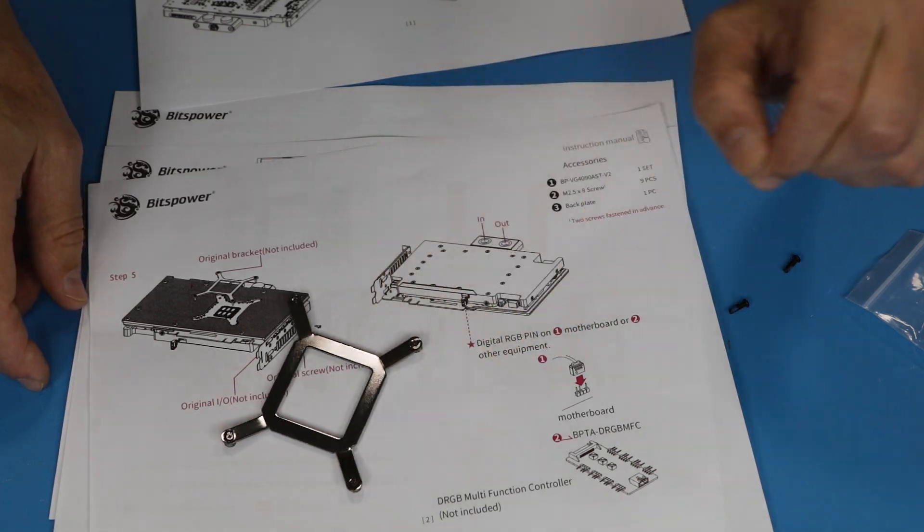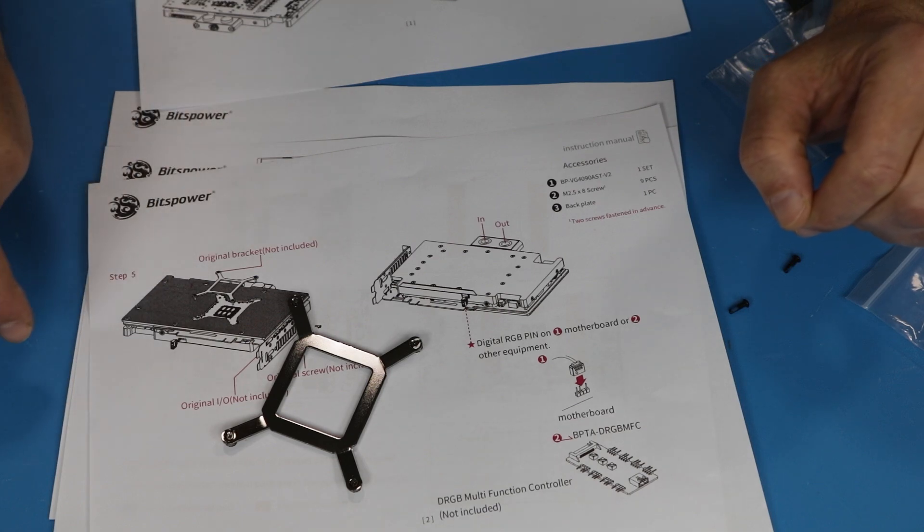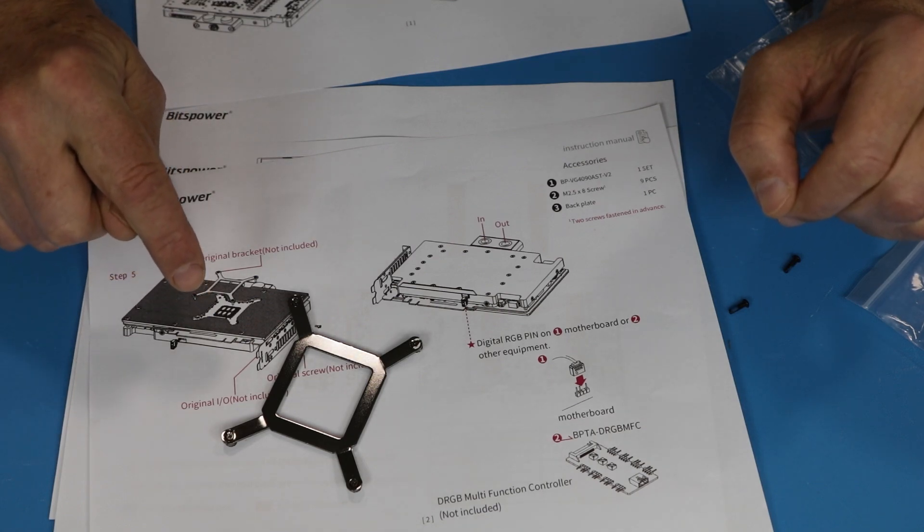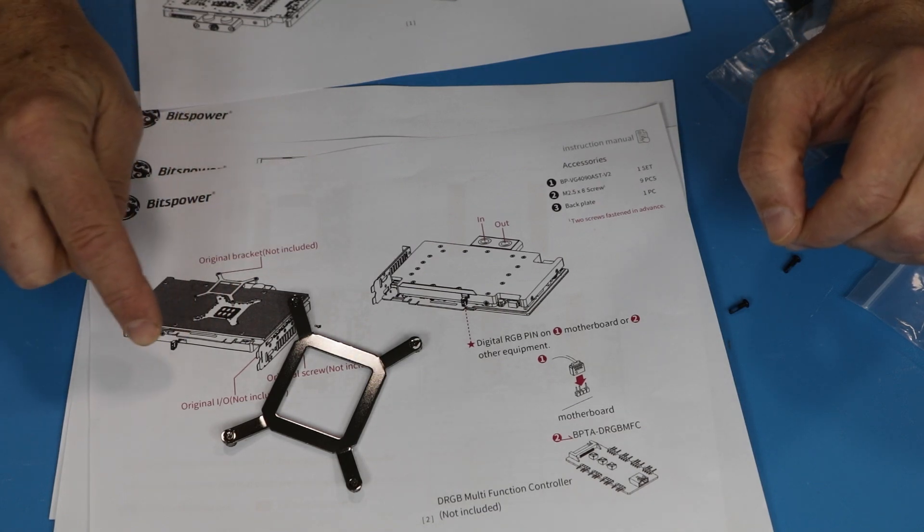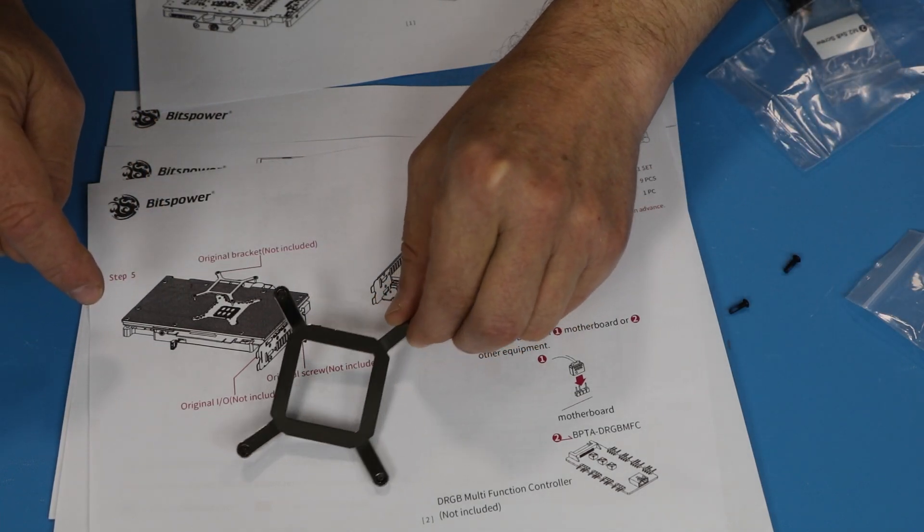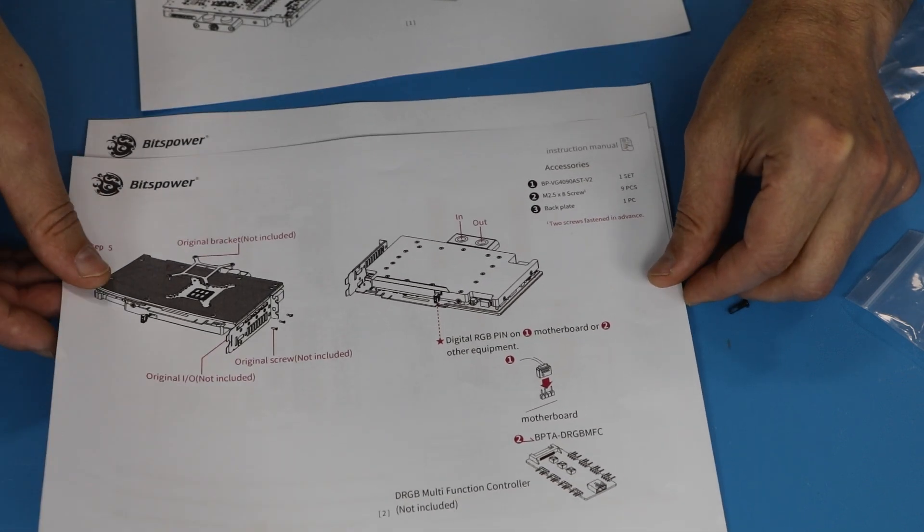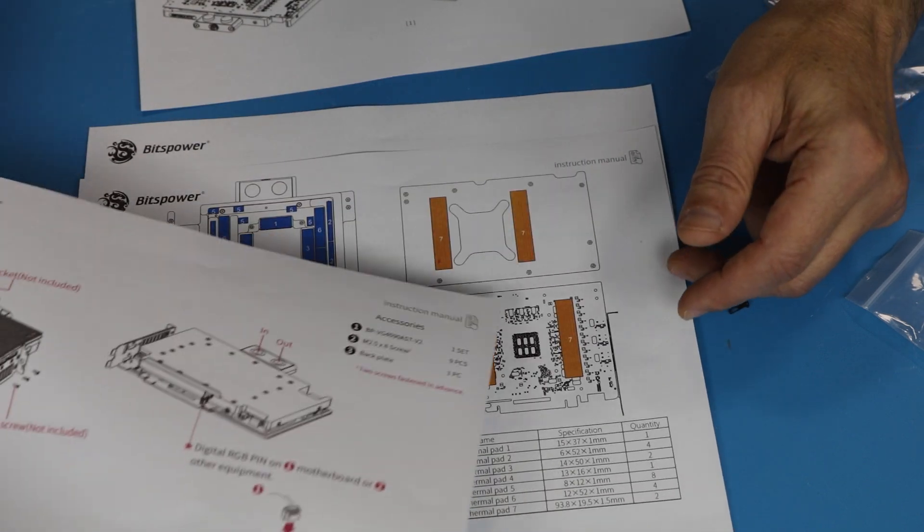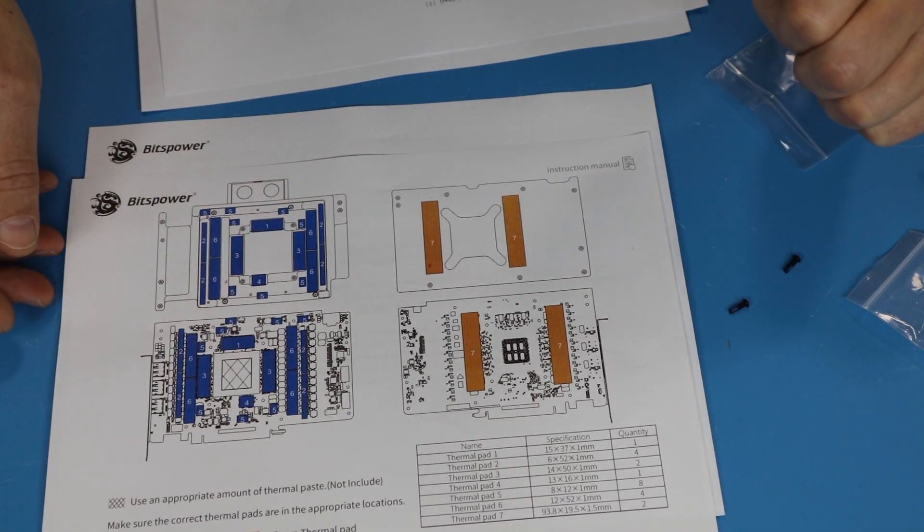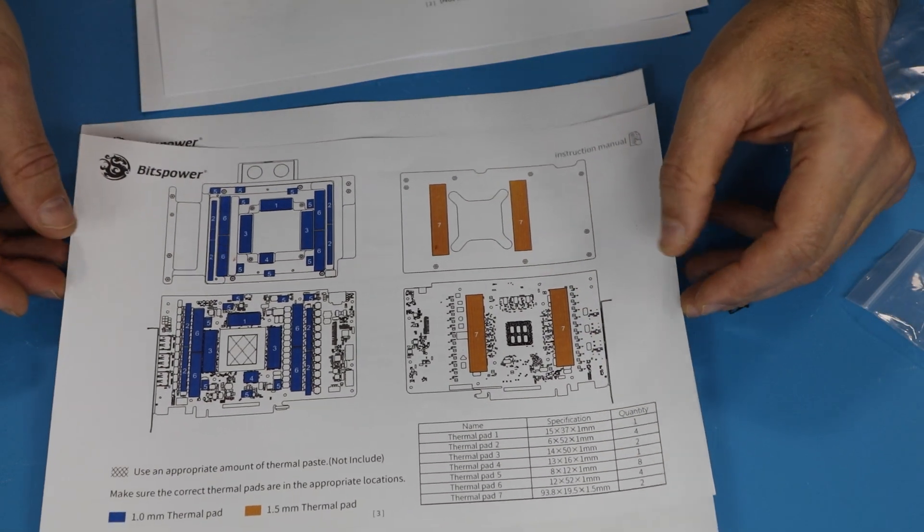Step three, we put it down with those screws. And the final step will be putting this original bracket in. That's interesting too. With any block I've installed ever in my life, you start with the middle part. Here you're finishing installation with the middle part. That's kind of interesting. This is the layout of all the thermal pads in case you need to replace them at a later date.